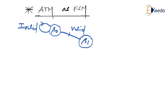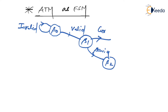Now, assuming you are in S1 and you select a saving account, the machine moves to S2 state. If you select a current account, it moves to another state called S3. Considering a saving account, we are now in S2 state, where it asks you to enter your ATM PIN number.